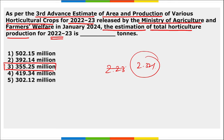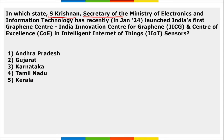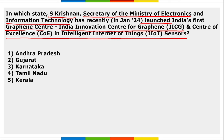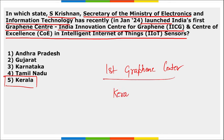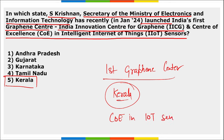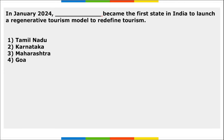In which state did Alkesh Kumar Sharma, Secretary of the Ministry of Electronics and Information Technology, recently launch India's first Graphene Center — the Indian Innovation Center for Graphene — and a Center of Excellence in Intelligent Internet of Things (IoT) sensors? Both were inaugurated in the state of Kerala.